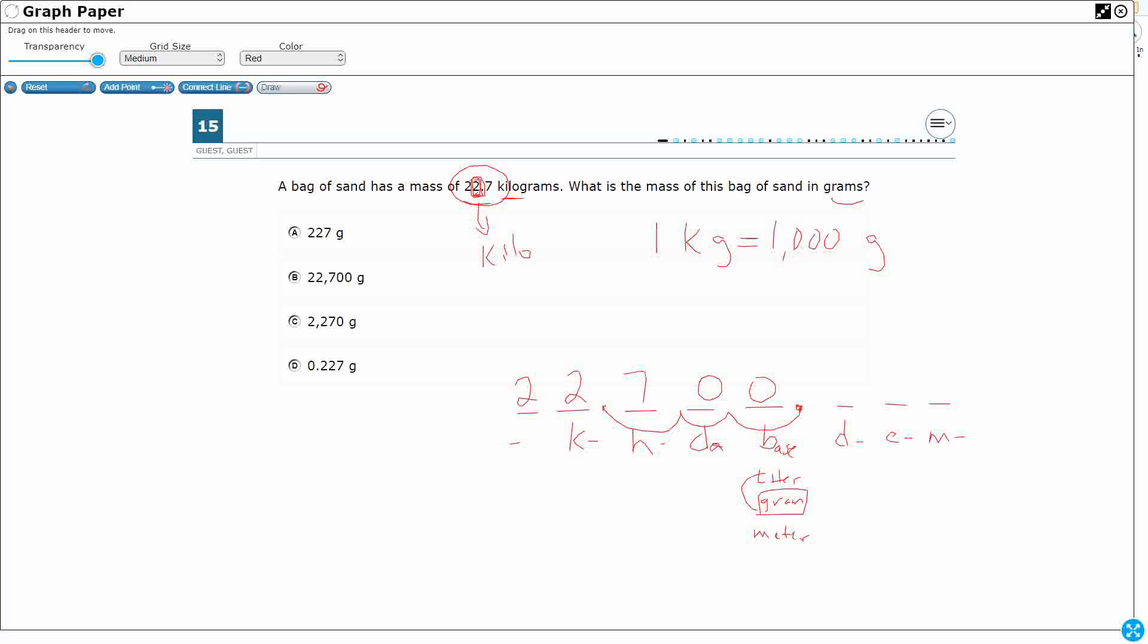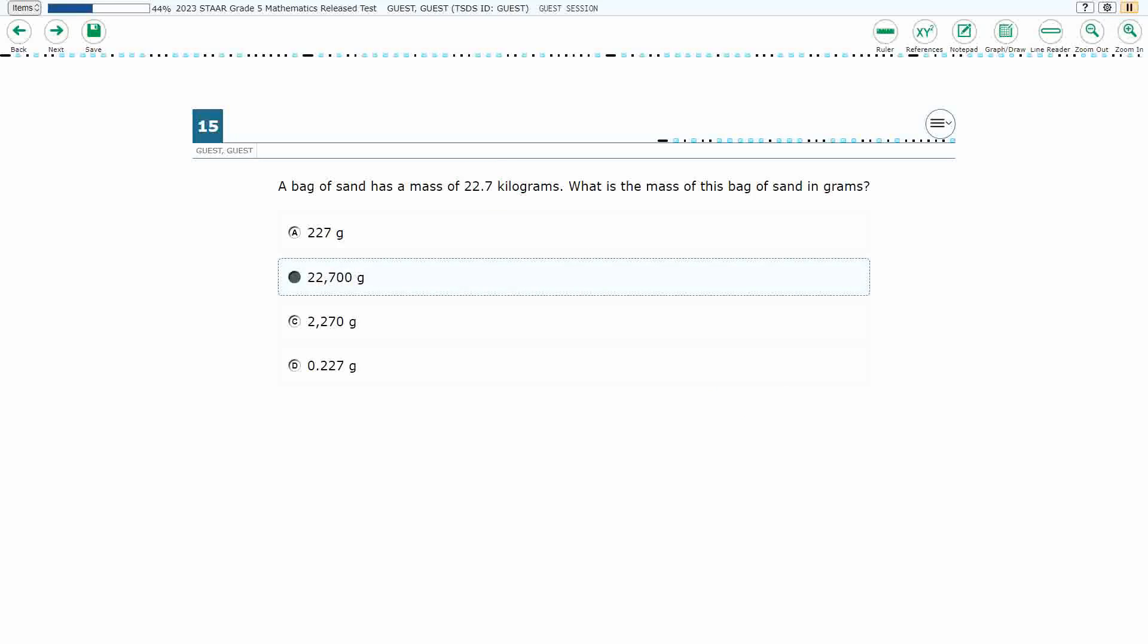Another way, and you could use that with converting any metric system unit just by moving decimals because they are tens-based. It doesn't work with customary. Or some of you might have thought, all right, so if one kilogram equals 1,000 grams, then if I've got 22 kilograms, that'd be 22,000. So you're just multiplying by 1,000. So you're going to take your 22.7, you're going to multiply by 1,000, or you're just going to move the decimal place over one, two, three spots. That's exactly what we did right down there. That works, multiplying by 1,000, either way your answer is B.